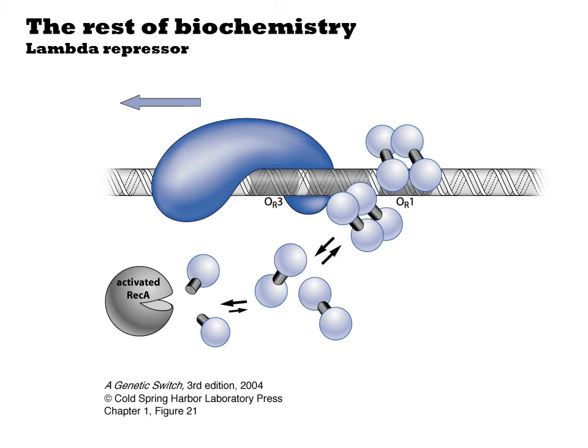As an example, here we show the binding of lambda repressor to its operator on a DNA. We can understand this behavior in terms of changes in complexation states of the molecules involved. Here, there are four recognizable states.